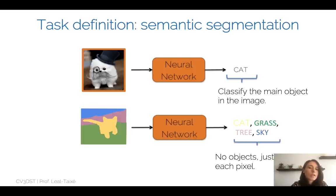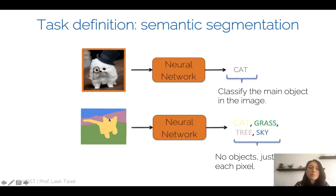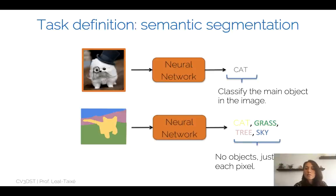Now, taking it one step further, we can put a bounding box around the actual object — around the cat. But now we want to go into an even more precise domain. We actually want to take the full image and assign a label to each pixel. So we don't just say there is a cat, or there is a cat within this bounding box — we want to say which pixels actually depict the cat, which depict the grass, trees, or sky.